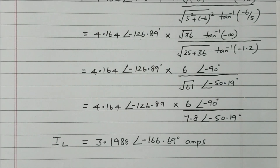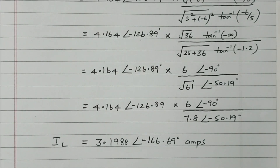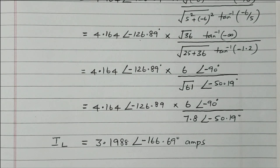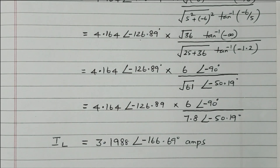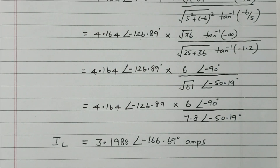We have calculated the current flowing through the 5 ohm resistor. In this problem, the complicated circuit was converted into a Norton equivalent circuit — a current source in parallel with Z-Thevenin. After converting to this simplified circuit, we easily calculated the load current using the current divider rule.